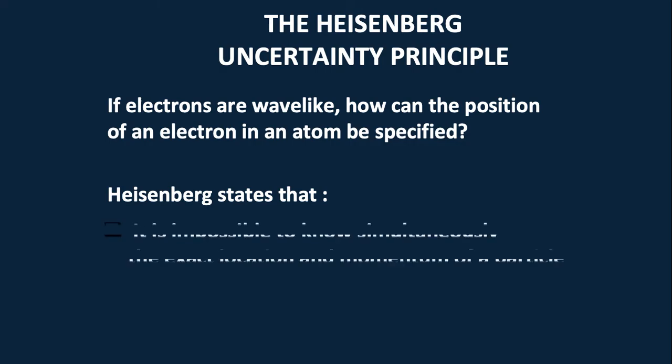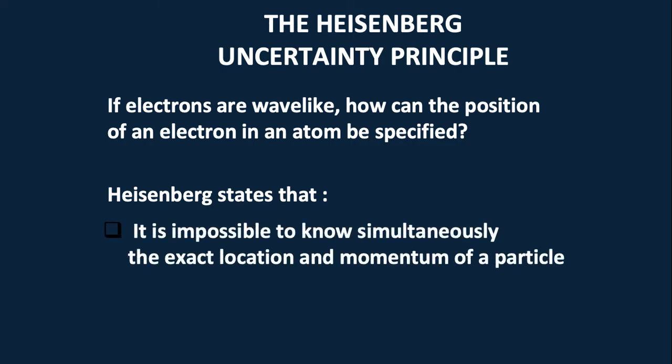Heisenberg states that it is impossible to know simultaneously the exact location and momentum of a particle because electrons are always moving. So this is the uncertainty principle of the Heisenberg.